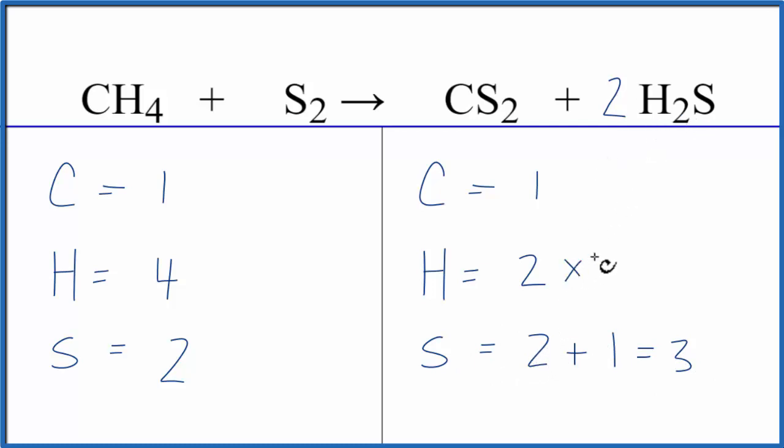So two times two gives us four. Those are balanced. Let's update the sulfurs. We have two here plus now we have the one times the two. That's two.